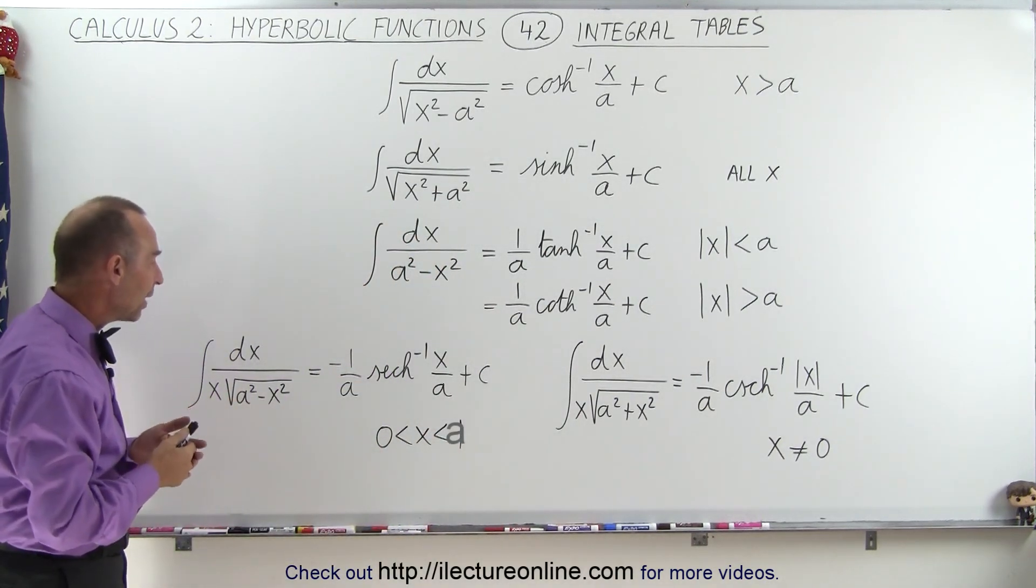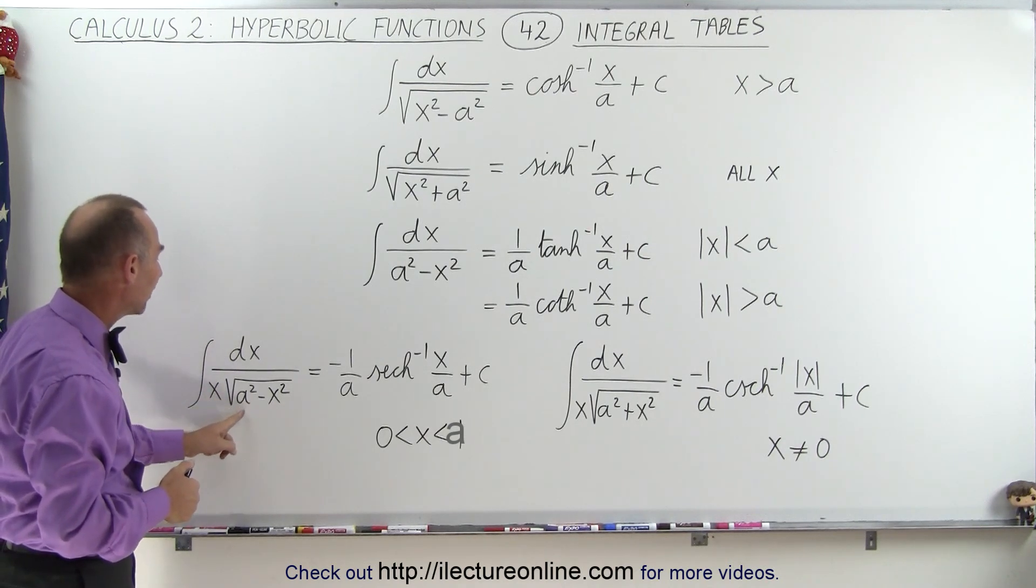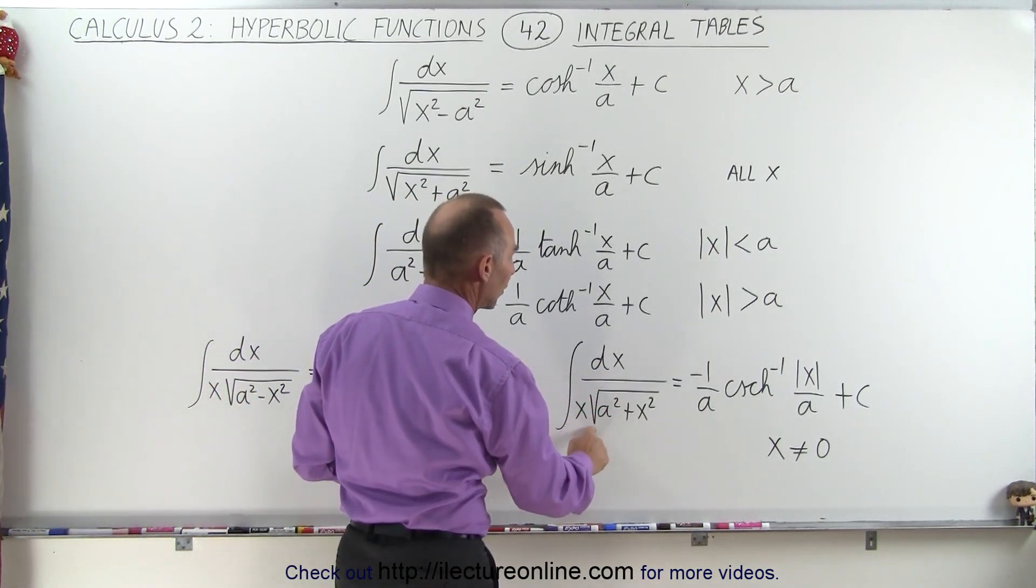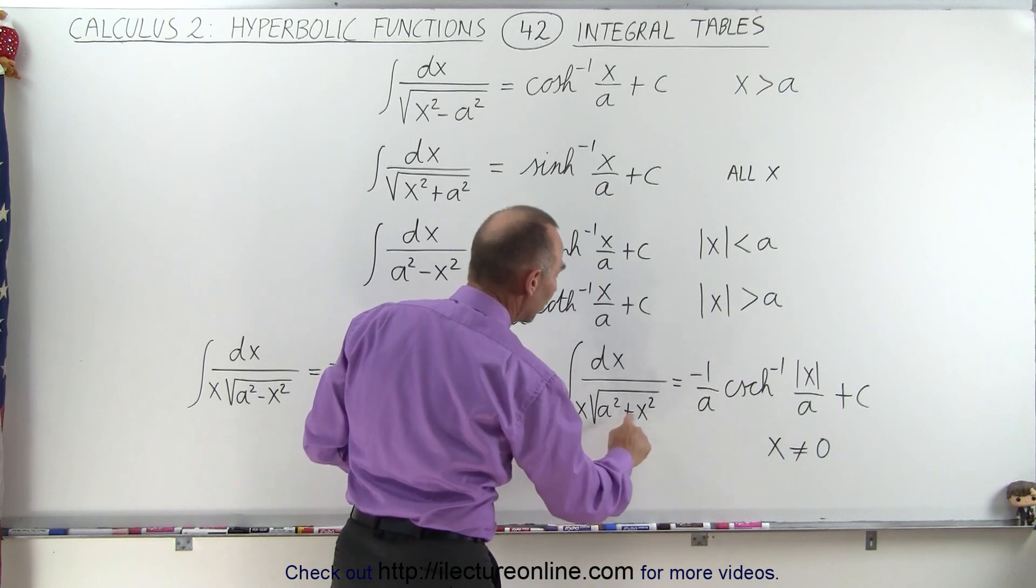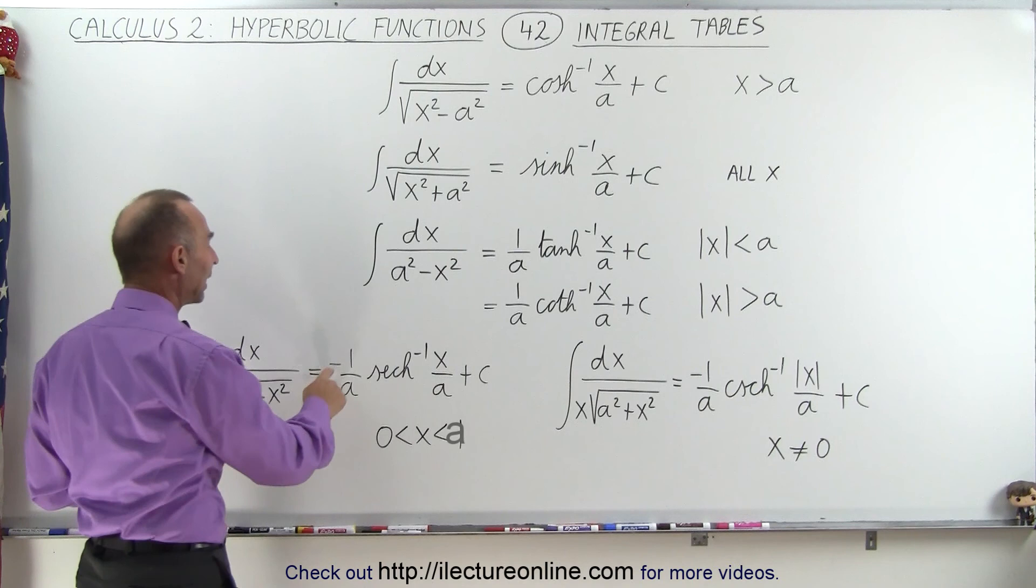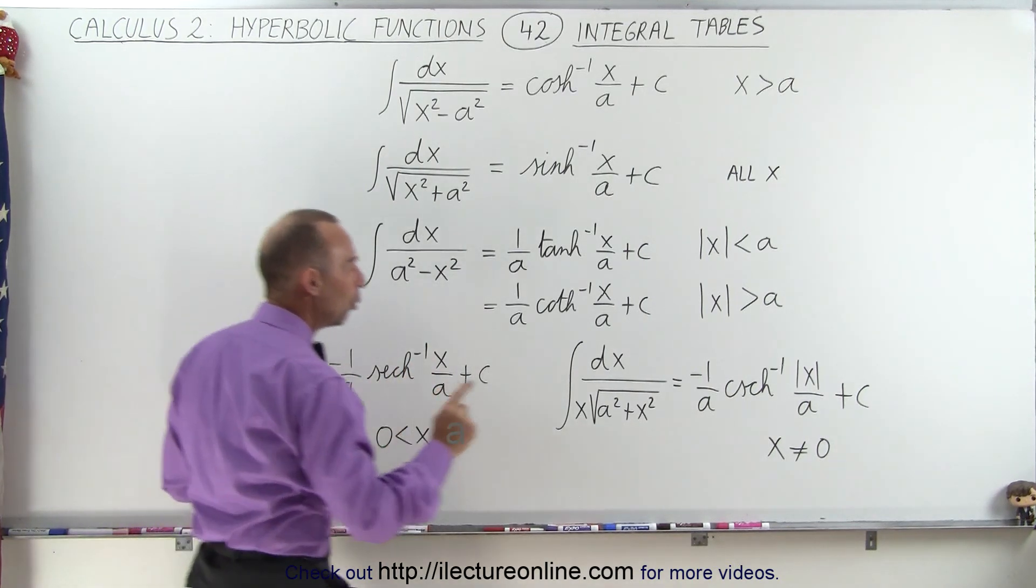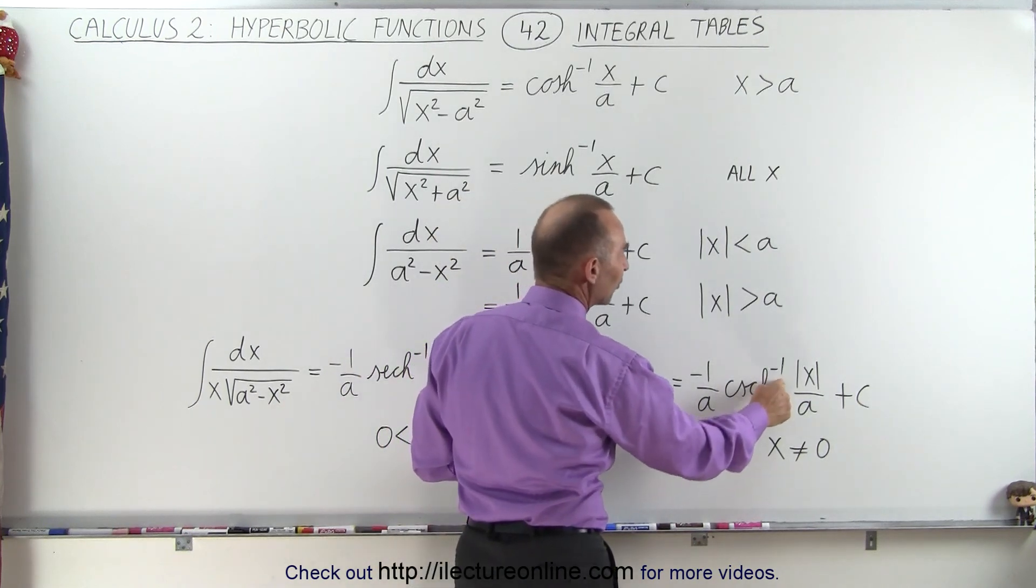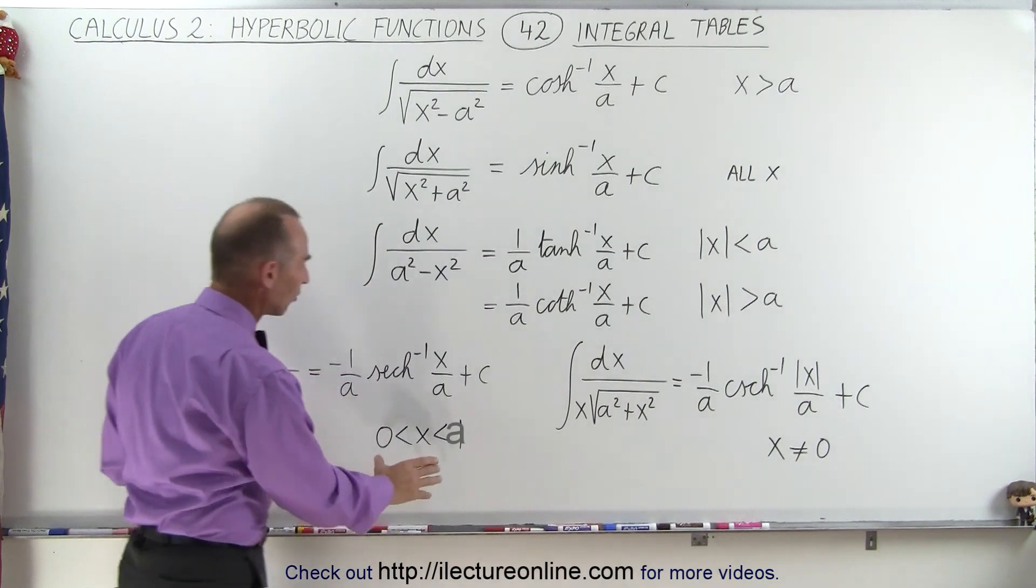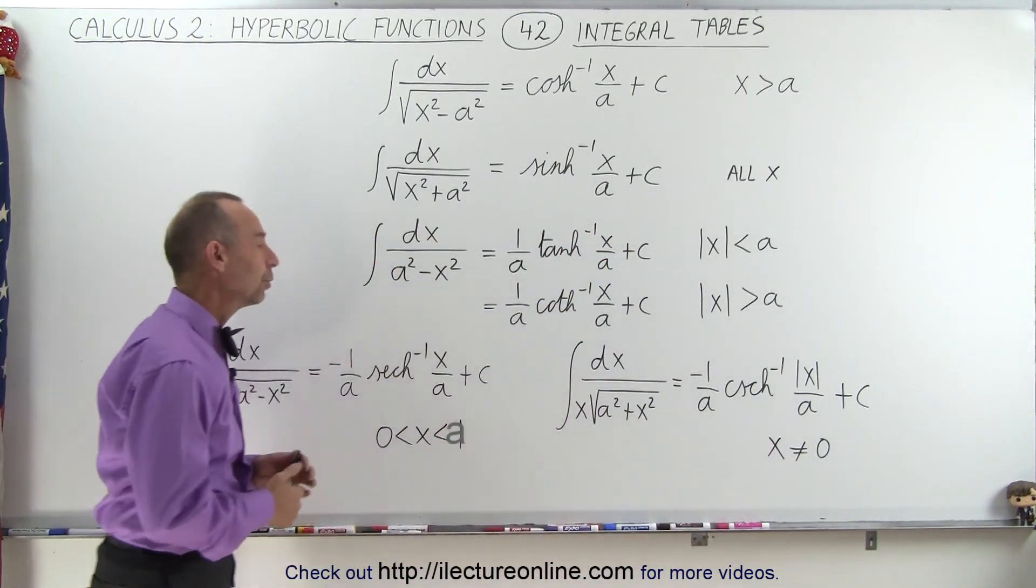And finally, we have these two right here. We have the integral of dx over x times the square root of a squared minus x squared, or the integral of dx over x times the square root of a squared plus x squared. Again, a in this case is a constant, and notice it's either minus 1 over a times the inverse hyperbolic secant of x over a, or minus 1 over a times the inverse hyperbolic cosecant of x over a. The restriction on x here is that x must be between 0 and a, and here it's simply that it cannot be equal to 0.